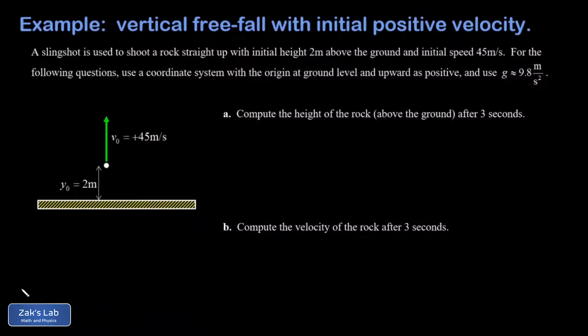In this video we're looking at a vertical free fall problem with an initial positive velocity as a rock is launched using a slingshot from a height of two meters above the ground. We're told to use a coordinate system with the origin at ground level and upward as positive. So that's probably the coordinate system you were going to use anyway. Again, the origin is at the ground so we can put the crosshairs of our coordinate system there and I'll put a little zero there to indicate that that's the origin.